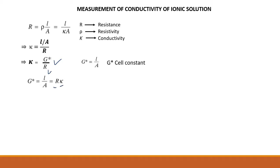By multiplying R and kappa together, we obtain the cell constant value. We know that in this electrolysis, if the electrolyte is not present, then the z-star value will also change. So from electrolysis, we can obtain the cell constant value in this way.